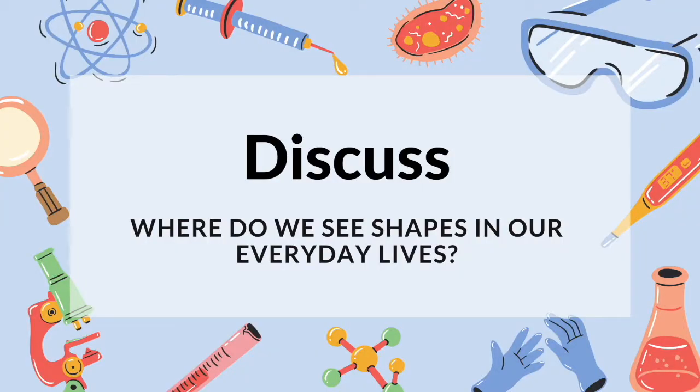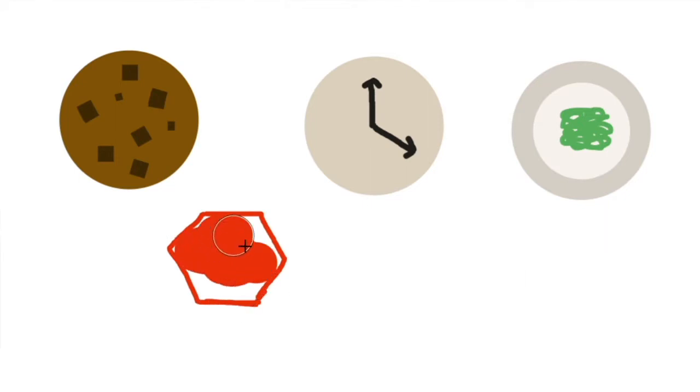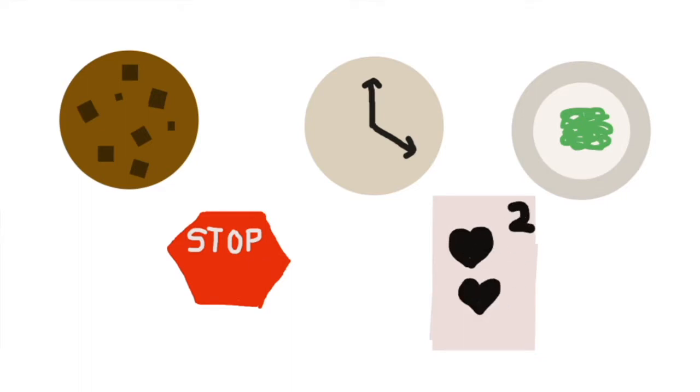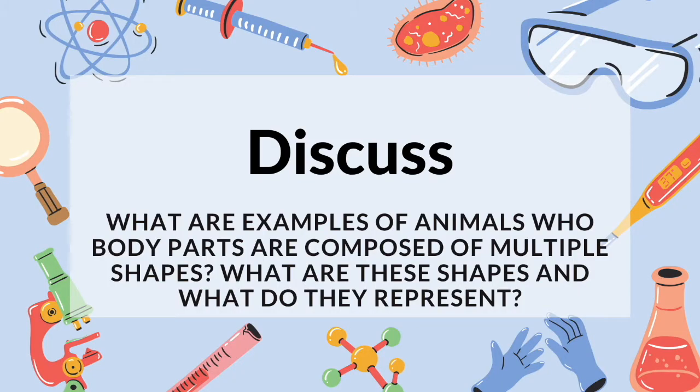After you have finished drawing, share your drawings with the group and talk about what they represent. Hold on to your drawings to take home later and show your family and friends. The first discussion question is: where do we see shapes in our everyday lives? Shapes appear wherever we turn our eyes and form the basis of everyday objects. For example, we see cookies, clocks, and plates in the form of circles. Beehives and stop signs are hexagons, and playing cards and crackers are rectangles.